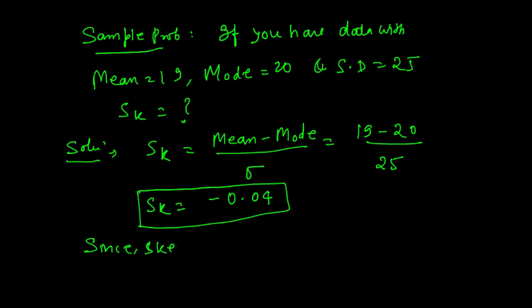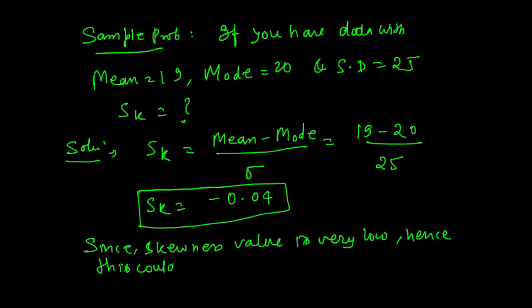There is very slight negative skewness. Since this skewness value is very low, this could count as a symmetric distribution. If you want to be precise, you can say it is negatively skewed. Otherwise, you can consider it symmetric because the value is so low.